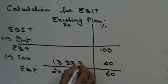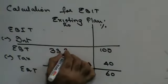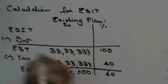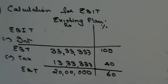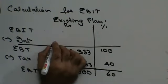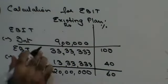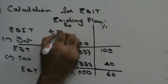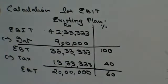The tax works out to 13,33,333, making EBT = 33,33,333. In the existing plan, we have 60 lakhs of debentures carrying 15% interest. 15% on 60 lakhs is 9 lakhs. So EBIT equals 33,33,333 plus 9 lakhs, which is 42,33,333. Now that I have EBIT, I can start the full calculation.